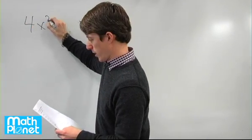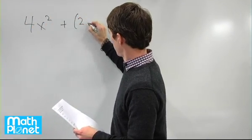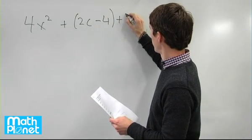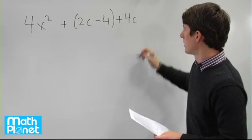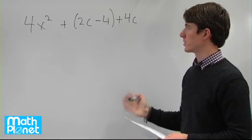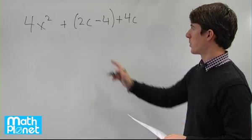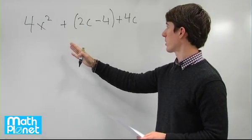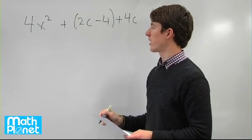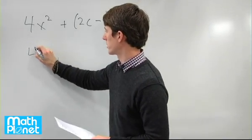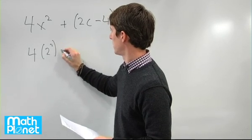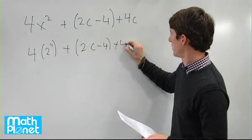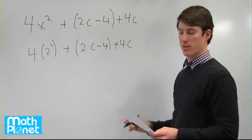We have the expression 4x squared plus the quantity 2c minus 4 plus 4c. If x is equal to 2, which is one of the two solutions, then we need to find what c is. So let's evaluate this expression at x equals 2 and solve for c. If we plug in 2, we can simplify it and then solve for c.